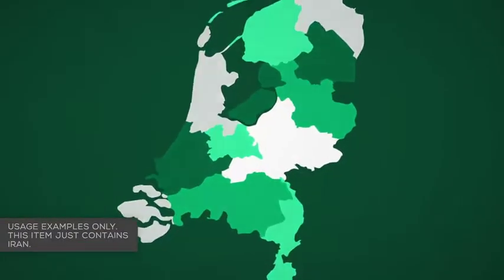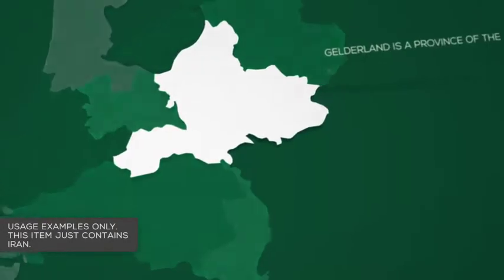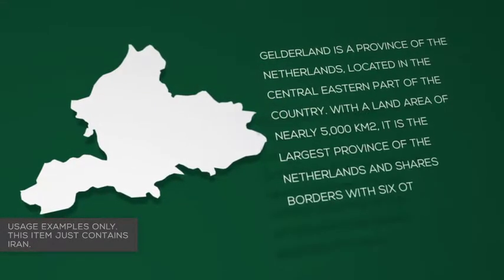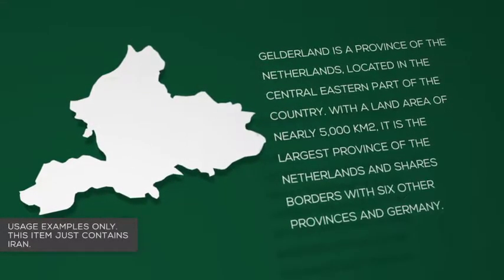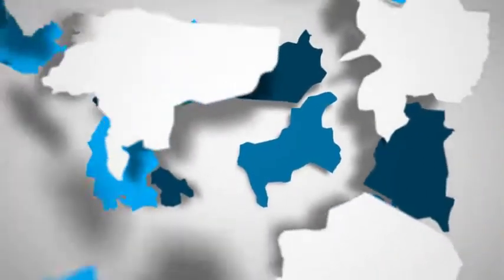Zoom in to regions of interest and hide the layers you don't need to focus on certain areas. Animate individual regions and add your own text and camera moves as required. Use your own content as a texture for the country — images, footage, whatever you need.